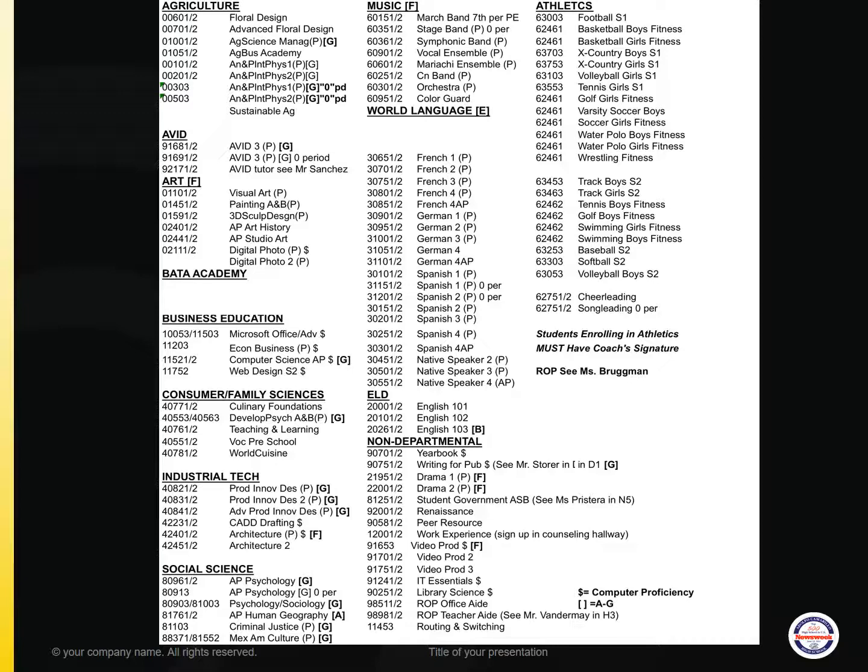Under Art, we offer visual art, painting, 3D sculpture, AP Art History, AP Studio Art, and Digital Photography 1 and 2. Under BADA Academy, if you're enrolled in the Business Academy, when you meet with your counselor she will give you the appropriate course number. Business Education offers Microsoft Office and Microsoft Advance, Econ Business (a semester class), Computer Science AP, and Web Design (also a semester class).